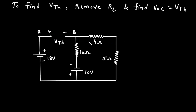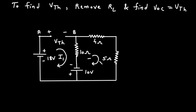VTH is equal to VA minus VB. First we will apply KVL to loop number 1 with current I1, but first we need to find the current through the 10 Ohm resistance. Let's call this current I. According to the direction of this current — since the positive terminal is here — from positive to negative, and the polarities will be positive, negative, positive, negative.